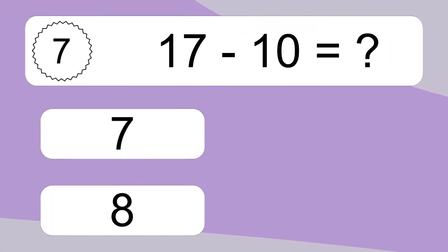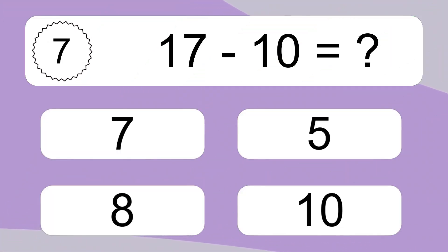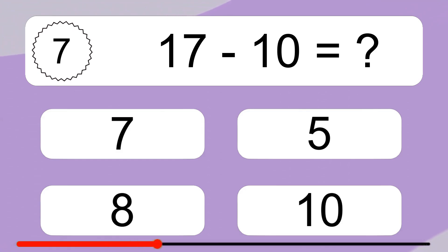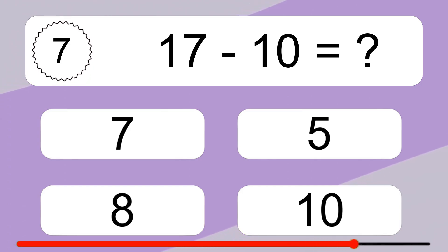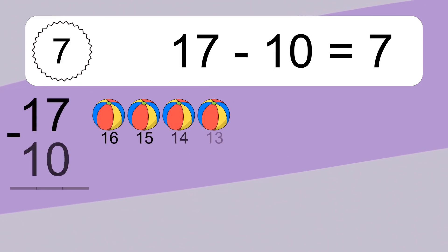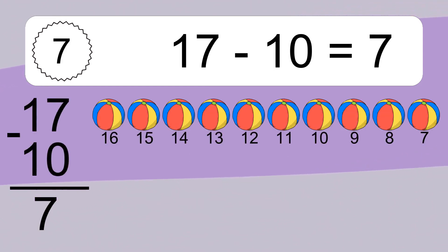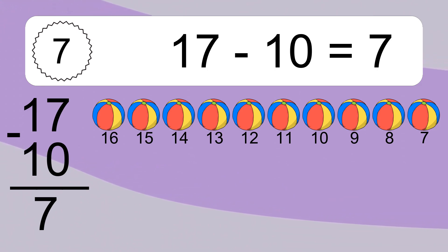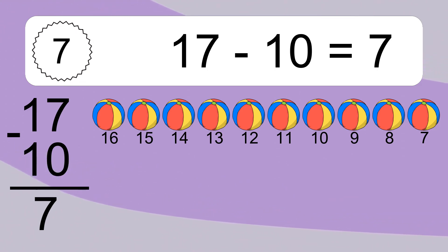17 minus 10 equals what? 17 minus 10 equals 7. Let's count it: 16, 15, 14, 13, 12, 11, 10, 9, 8, 7.